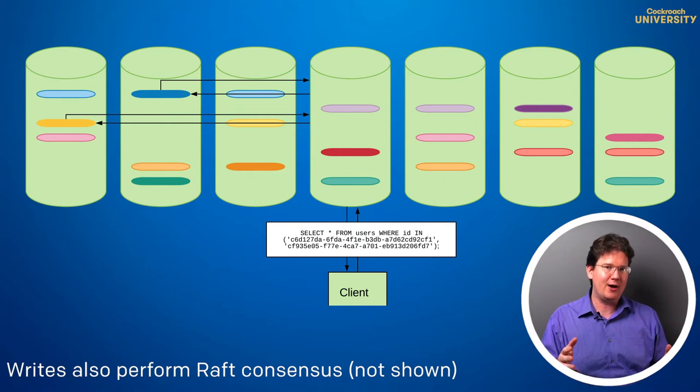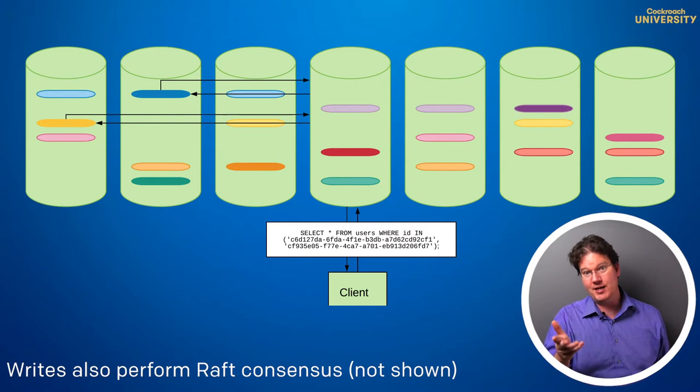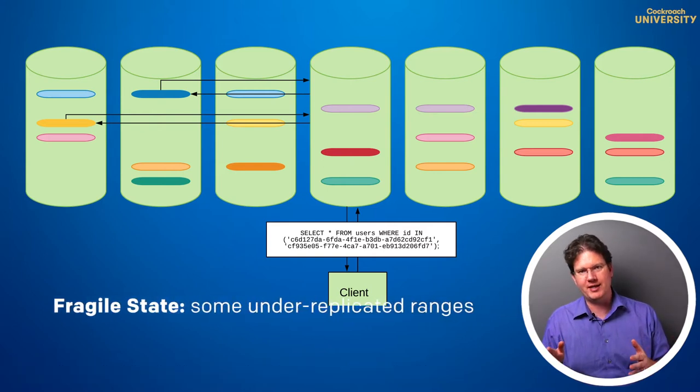When a node goes down, the situation is also very similar to the three-node case, or it will be initially. As before, ranges with a lost leader will elect new ones within seconds. The cluster will remain available for reads and writes, but it'll be in a fragile state.